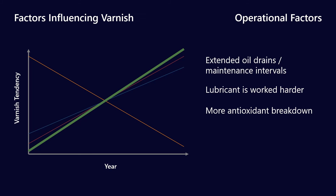Finally, extended oil drains and maintenance intervals mean we're asking the lubricant to last longer — it gets worked harder, leading to more breakdown of the antioxidant package. When you put all these factors together, yes, the industry has moved from Group I to Group III base stocks, improving oxidation stability. But there are so many more factors acting against us: reduced solubility, changes in how gas turbines are operated, and increasing turbine operating temperatures. That's why, even though lubricant technology has improved substantially over the last 40 years, we're actually seeing more turbine varnish problems in 2020 than we probably were back in the 1980s.